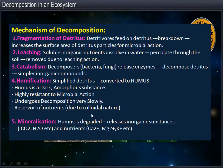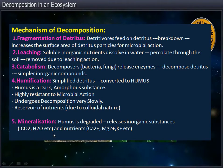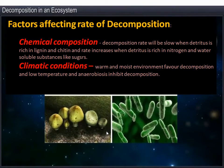The next process is mineralization. In this process, humus is degraded and it releases inorganic substances such as CO₂, H₂O, and nutrients such as calcium, magnesium, and potassium. These were the various steps of decomposition in an ecosystem.